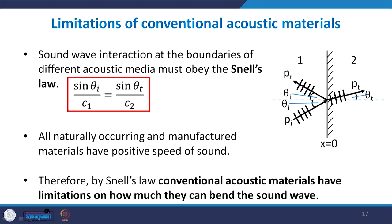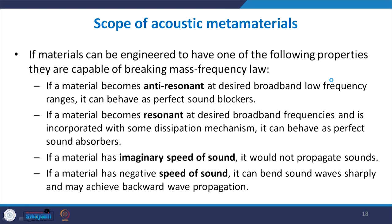Due to these limitations, a new type of material is desired. The second limitation of conventional acoustic materials is that whenever sound interacts with a boundary it must obey Snell's law. Since the speed of sound is positive in both media and θᵢ can only vary between 0° and 90°, the transmitted angle θₜ is limited to a narrow range. They are not able to bend sound waves sharply. These two limitations — poor low-frequency performance and inability to bend sound waves — motivate acoustic metamaterials.